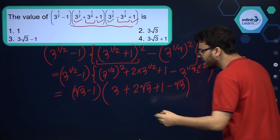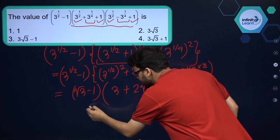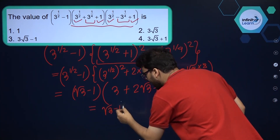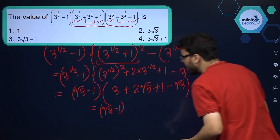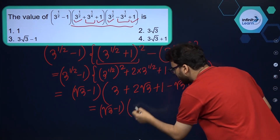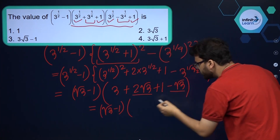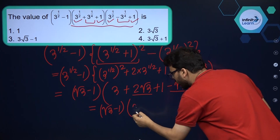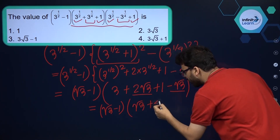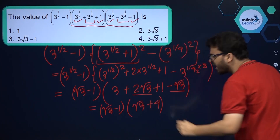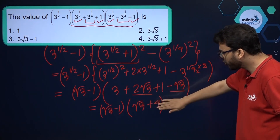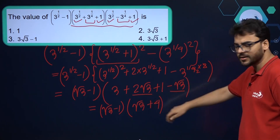Now let's simplify this whole thing. This gives us root 3 minus 1, and over here 2 root 3 minus root 3 is root 3, and 3 plus 1 is 4 over here. So we have root 3 minus 1 multiplied by root 3 plus 4. Now we just have to multiply and open up this bracket.